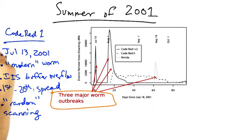Code Red 1 was released on July 13, 2001, and was the first modern worm. It exploited a buffer overflow in Microsoft's IIS server. From the 1st through the 20th of each month, it would spread by finding new targets using a random scan of IP address space. It would spawn 99 new threads which generated IP addresses at random and then looked for vulnerable instances of IIS.